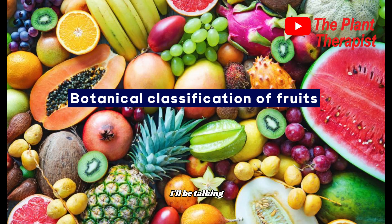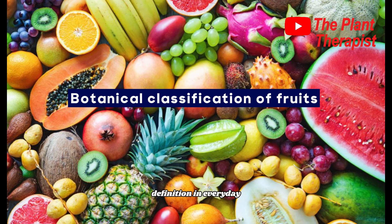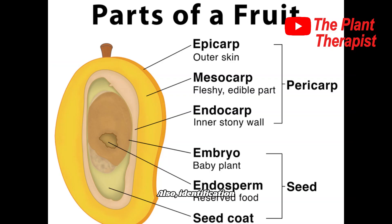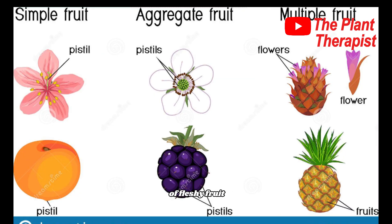In this video I'll be talking about fruits. I'll provide the botanical definition of fruits and explain why some people may use different definitions in everyday life. Identification of regions of a mature fruit will also be mentioned, along with types of fleshy fruit, types of dry fruit, and other fruits such as aggregates and multiple fruits.